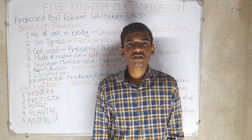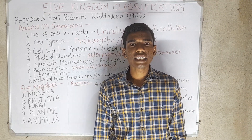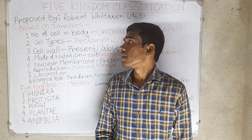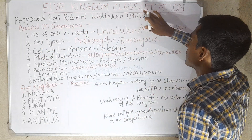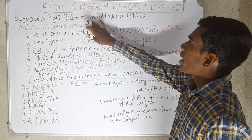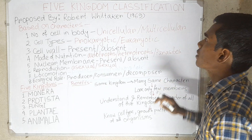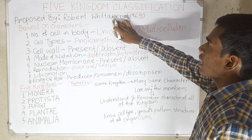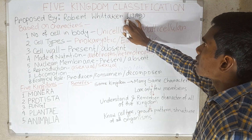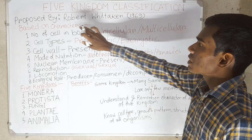Hello students, I am Sudarshan Pal, welcome to Sudarshan's Biology. Today's topic is five kingdom classification. Five kingdom classification was proposed by Robert Whittaker in 1969. Whittaker divided organisms into five main kingdoms based on certain characters.